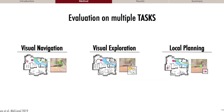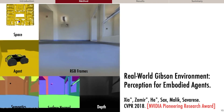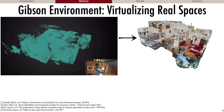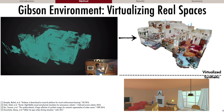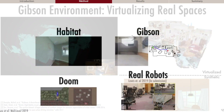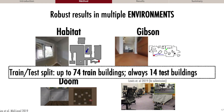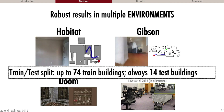We implemented these tasks in a bunch of different simulators, including Gibson, which virtualizes real buildings — 572 of them, scanned in 3D and reconstructed with images attached. We use that as the underlying data for learning and simulation, so the agents remain rooted in the real world, in contrast to using synthetic data. We use a train-test split with up to 74 training buildings and always 14 test buildings.